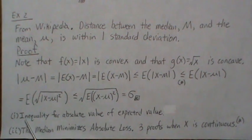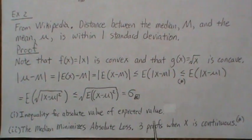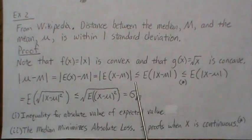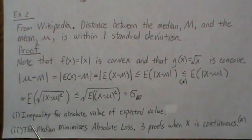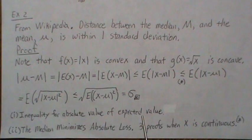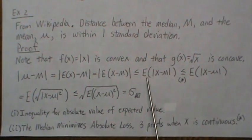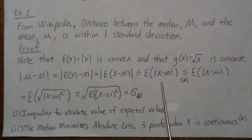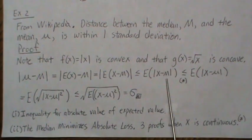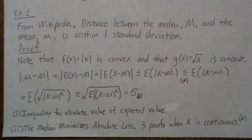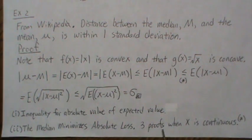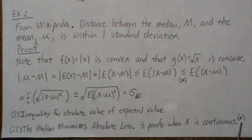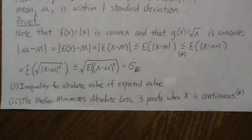Since the square root is concave, Jensen's inequality lets us bring it outside, giving sqrt(E[(x - μ)²]). But E[(x - μ)²] is the variance, and taking the square root is the standard deviation σ. So the mean and median are within one standard deviation of each other. Two notes: the inequality |E[f(x)]| ≤ E[|f(x)|] is proven in a separate video, and the fact that the median minimizes absolute loss is proven in another video with three proofs for the continuous case.